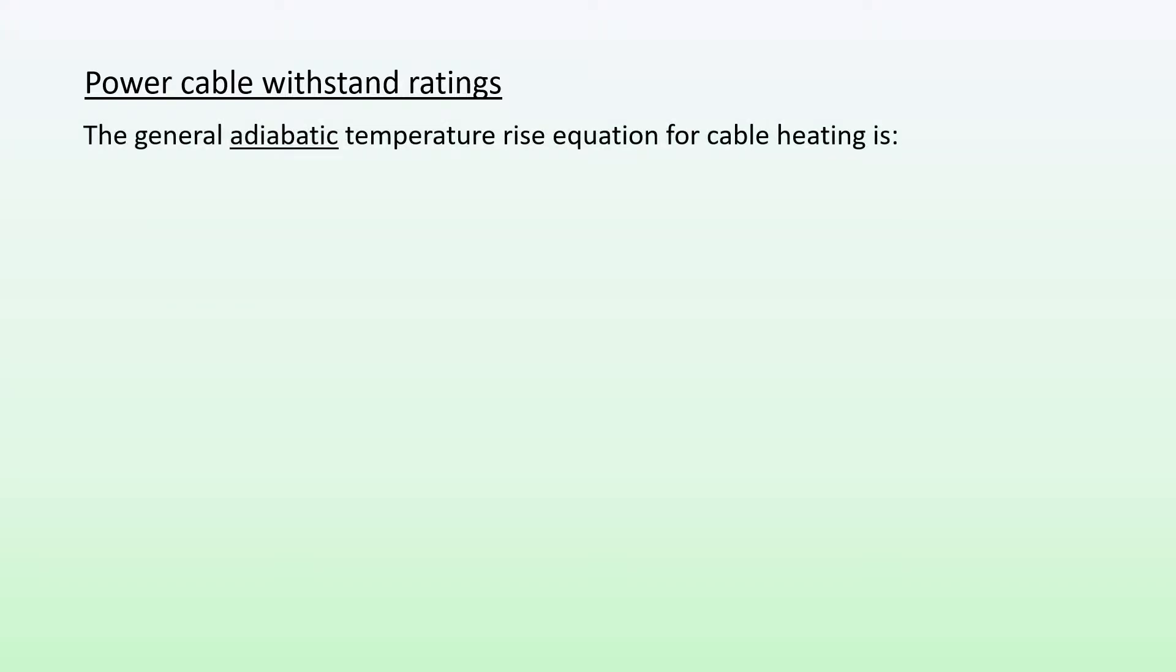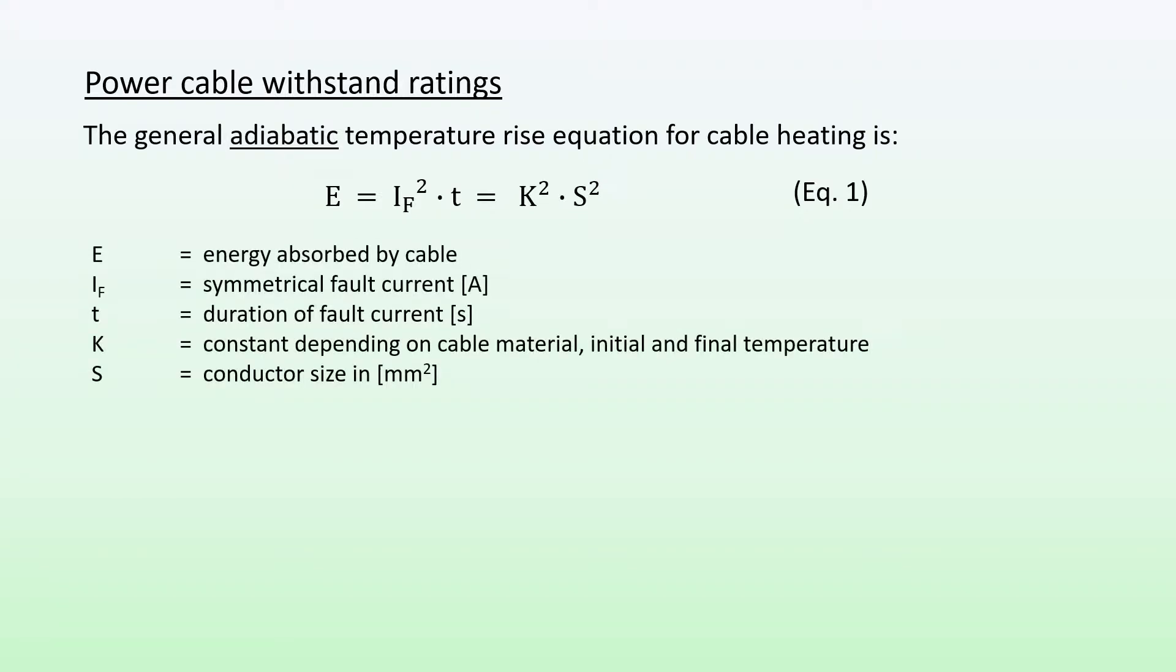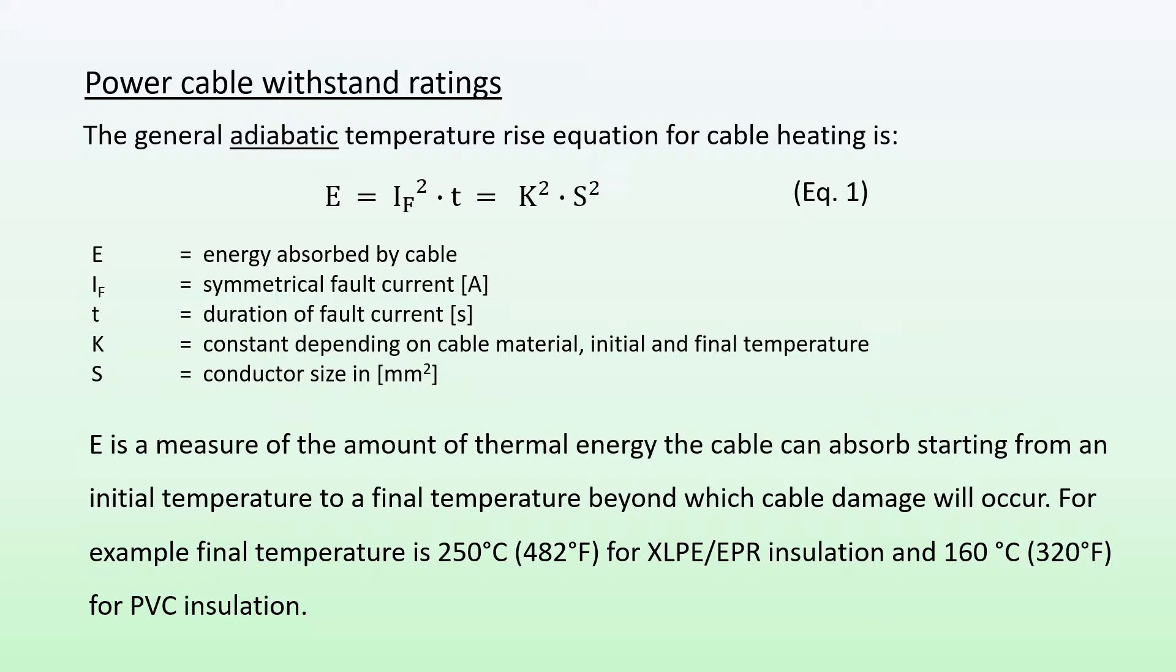The general adiabatic temperature rise equation for cable heating is as follows: E = I²·t = K²·S². What do these stand for? E is the energy absorbed by the cable during a fault situation, If is the symmetrical fault current, and t is the duration of fault current in seconds. K is a constant depending on cable material, the initial and final temperature. S is the conductor size in millimeters squared. So E is a measure of the amount of thermal energy the cable can absorb starting from an initial temperature to a final temperature, beyond which cable damage will occur.